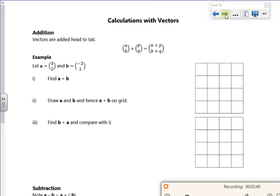So we're adding the vectors together. So I've got one vector, which is 3 across 2 up. That's a. And another vector, which is 2 left 1 up. Which is b. There. So find a plus b. So a plus b will be 3, 2 plus minus 2, 1. And all I do is add the i component. So 3 add minus 2 is 1. And then add the j component. 2 plus 1 is 3.